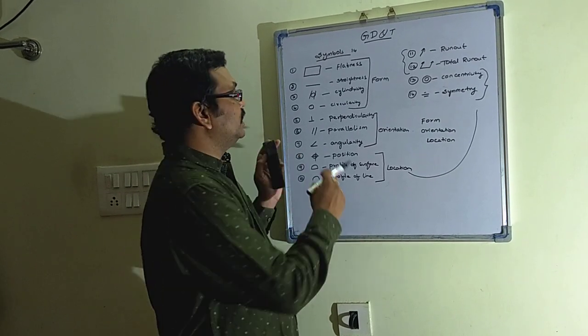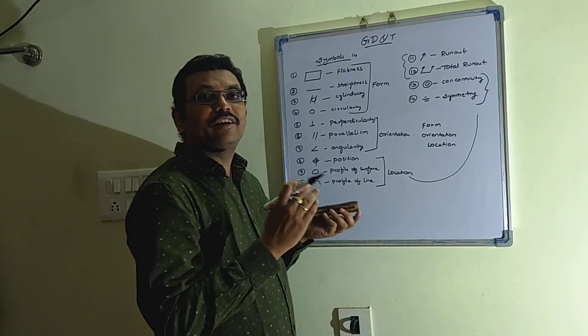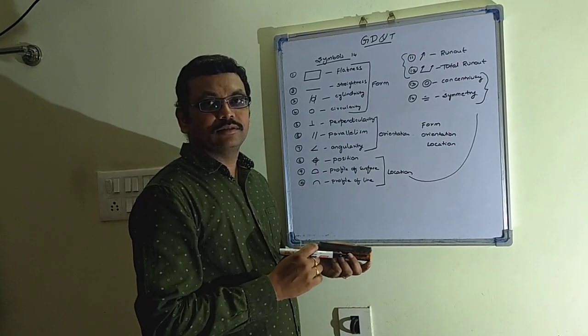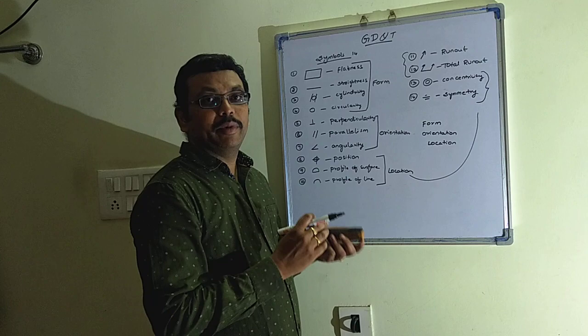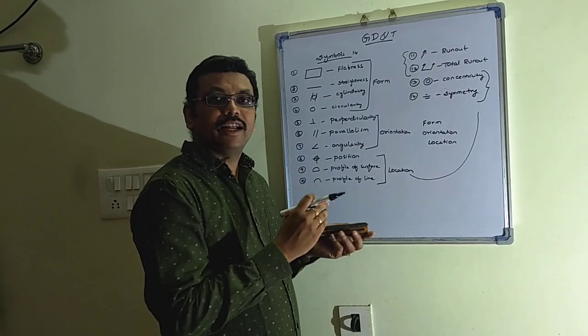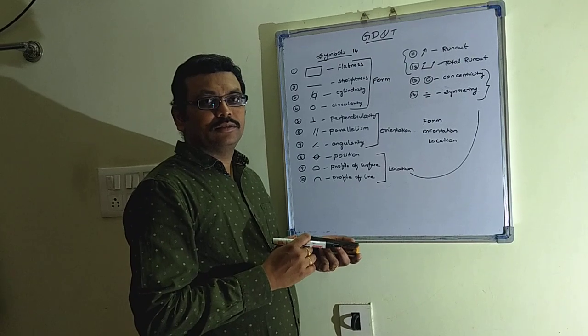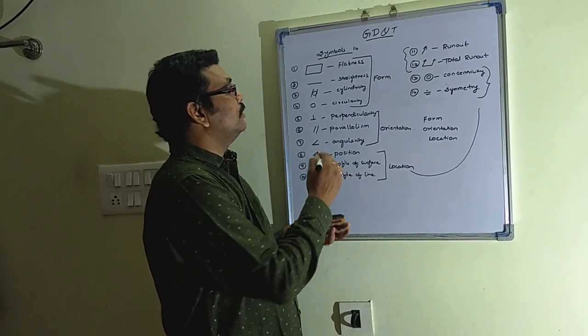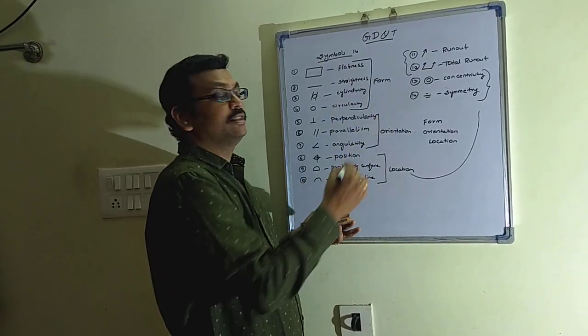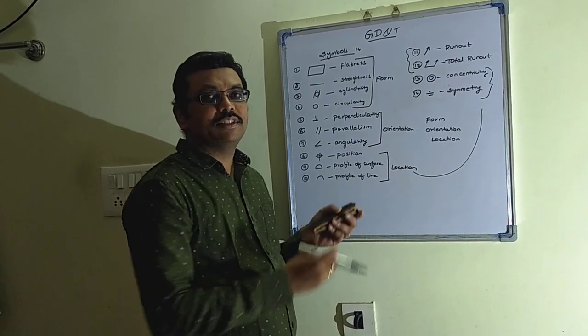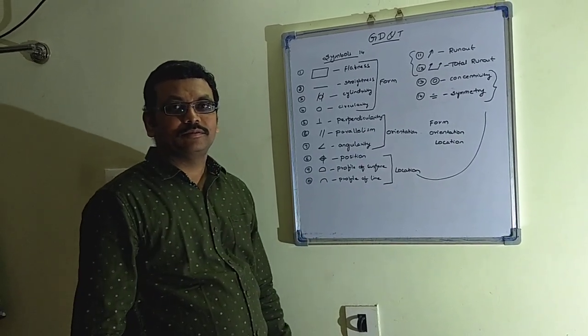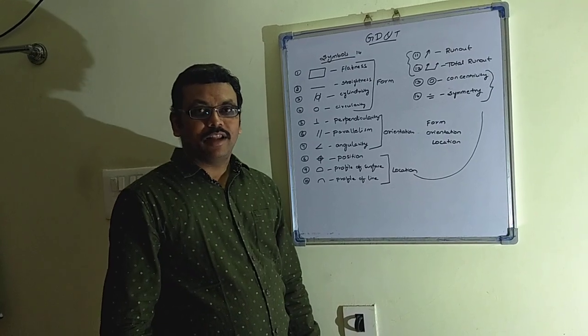So by using all these symbols we have to define a component based on its applications and based on the dimensions. So in the next section we will see what are these exactly related to with some examples. Thank you.